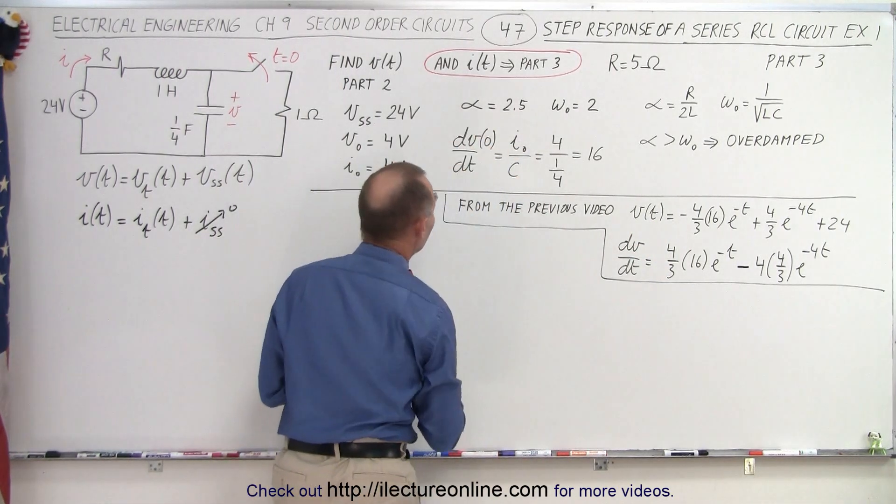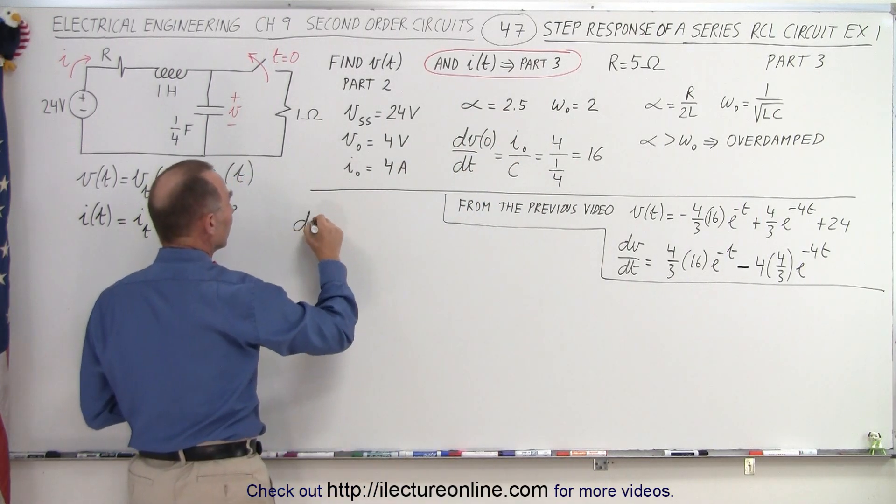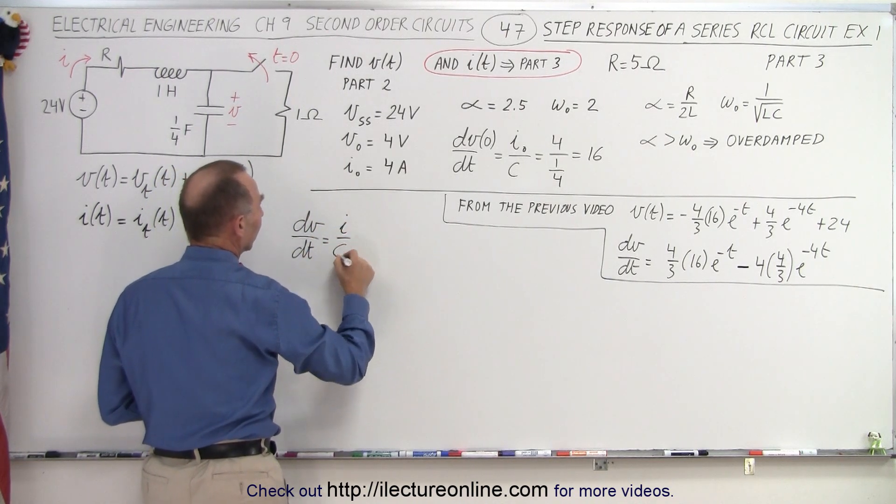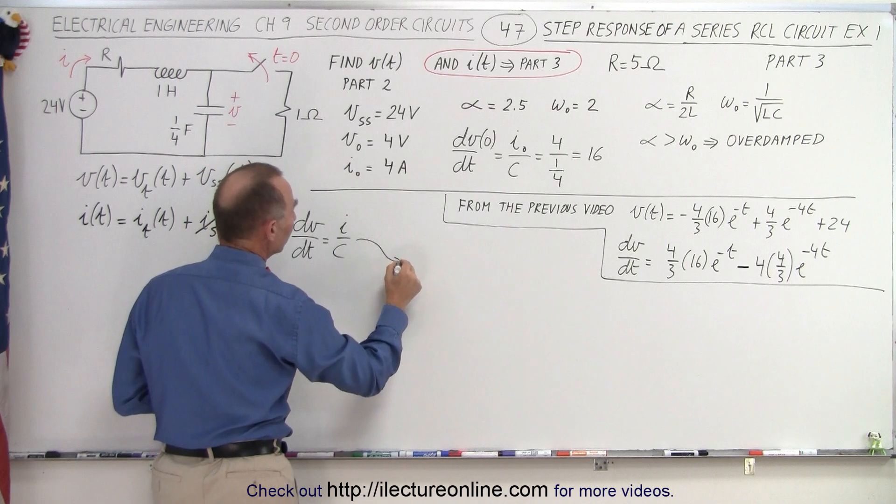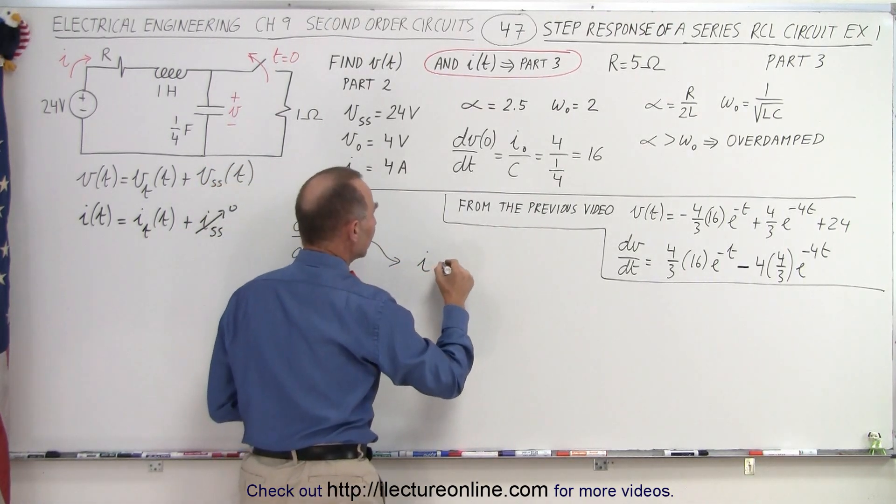Take a look at this relationship. I know that this is at initial conditions, but we can also write that dV/dt is equal to the current divided by the capacitance, which means we can write that the current is equal to the capacitance times dV/dt.